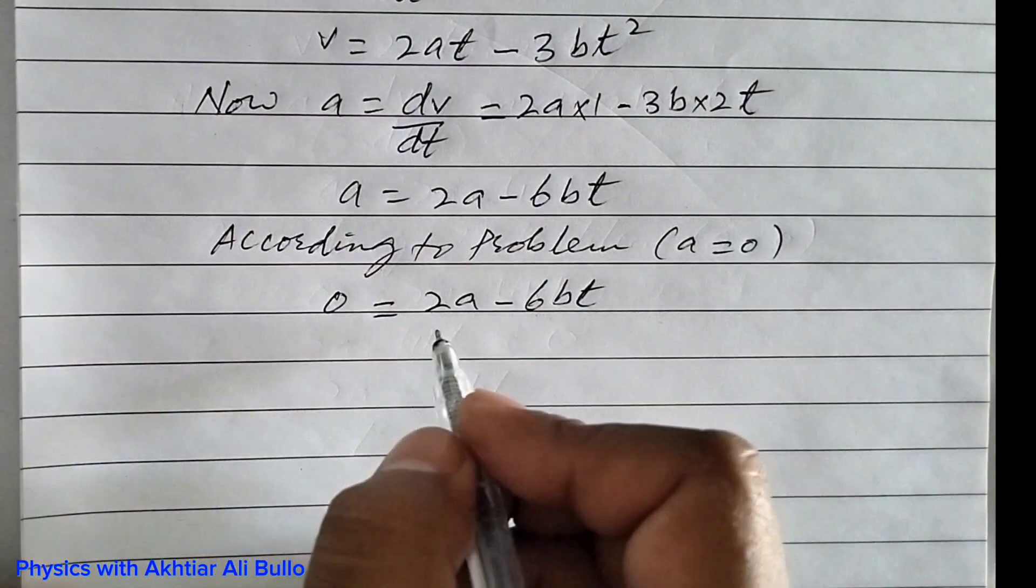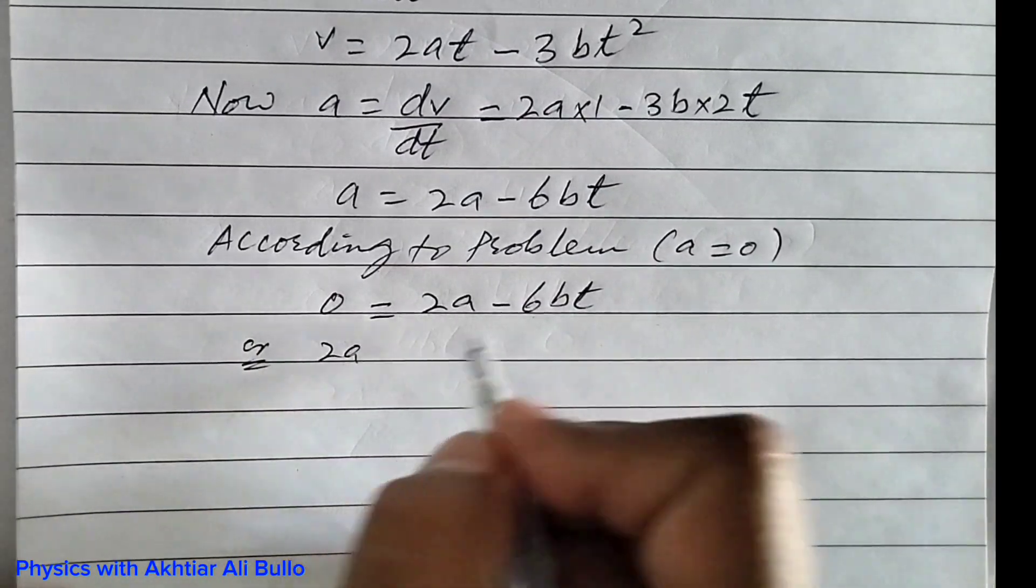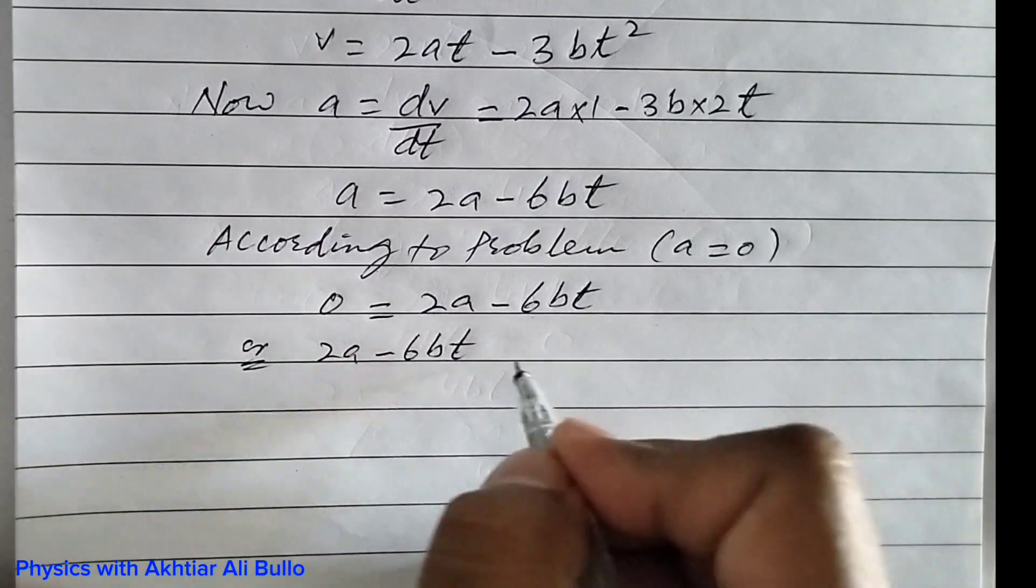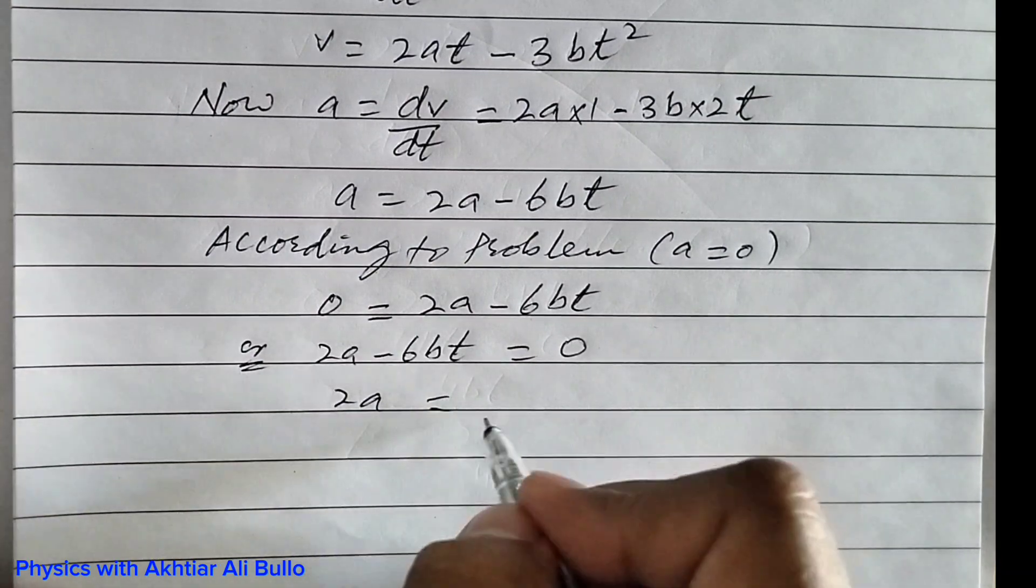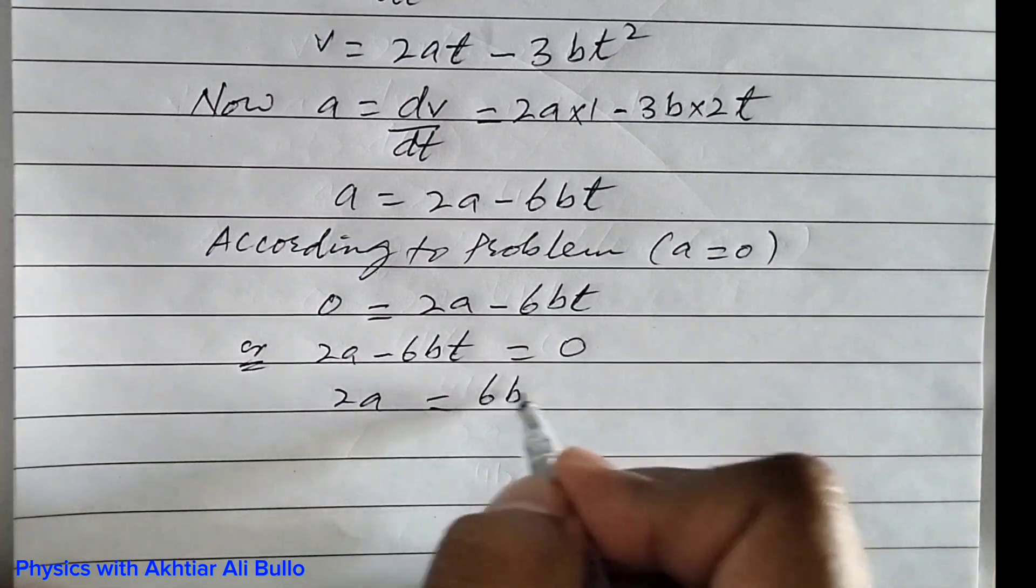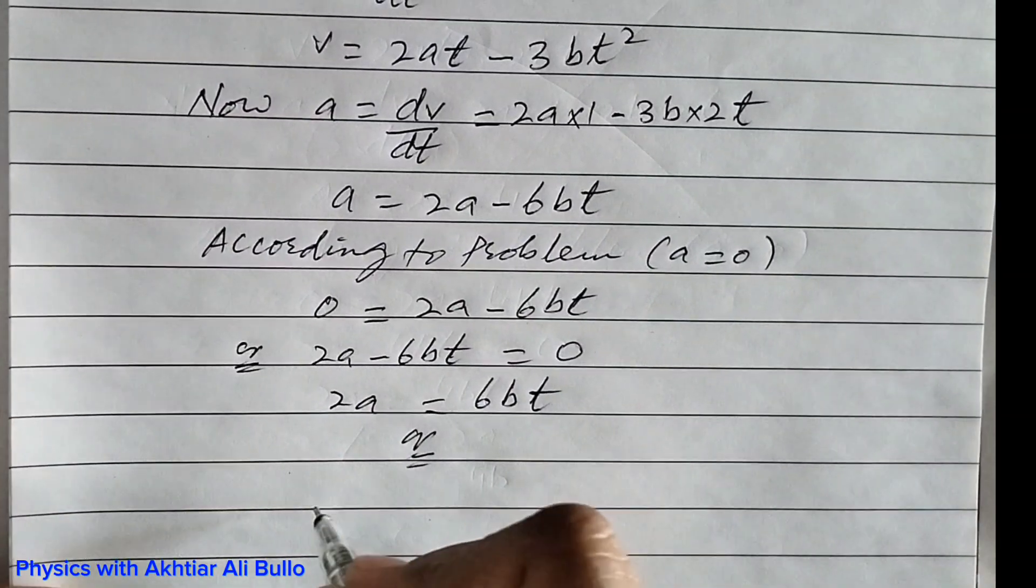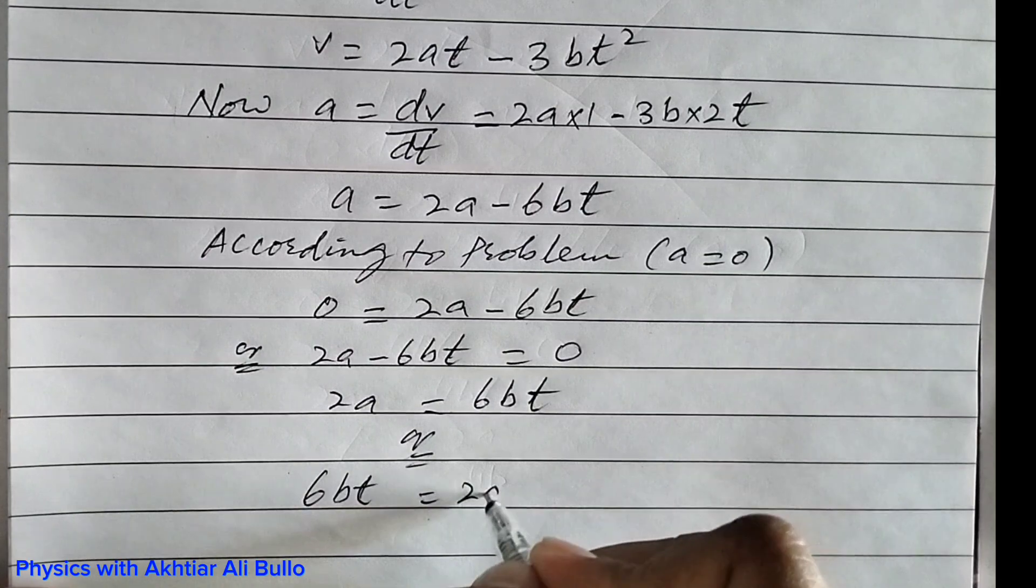Or we can write 2a - 6bt = 0. So 2a = 6bt, or 6bt = 2a.